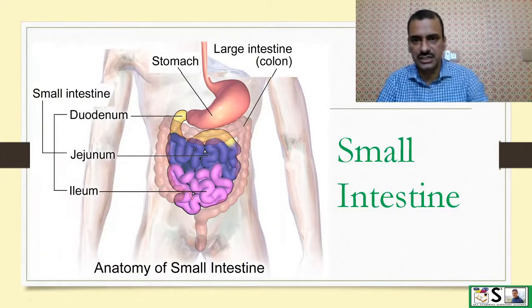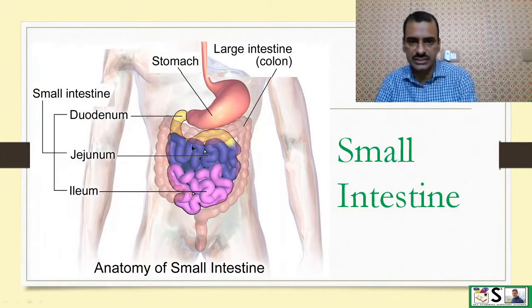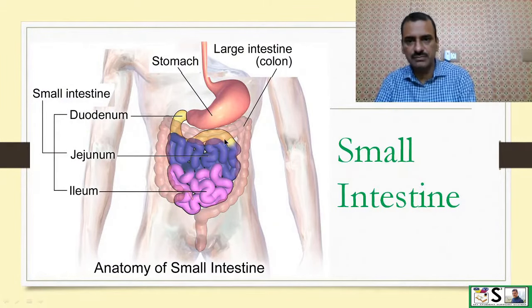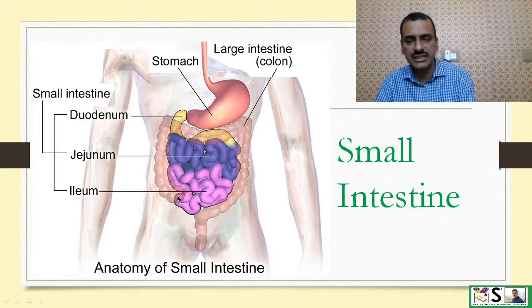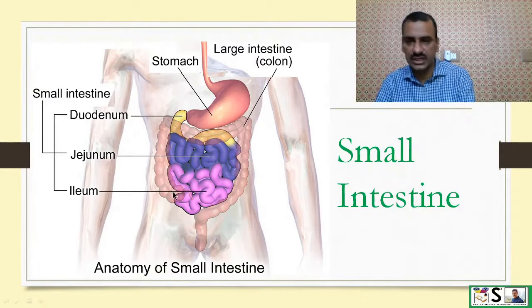Here you can see: this is the duodenum, this is the jejunum, and this is the ileum. It ends at the starting point of the large intestine.